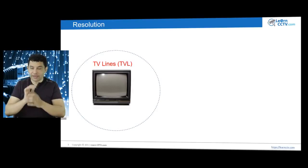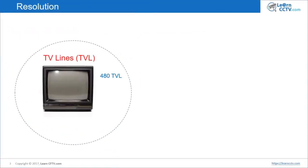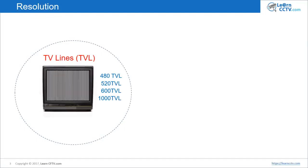For example, you can buy a camera with 480 TV lines, 520 TV lines, 600, 1000, or even different resolutions. It's also the same with your monitor — you can buy your monitor with different resolutions in TV lines. You have the first line in your monitor and you have the last line, depending on your resolution, let's say 1000 TV lines.